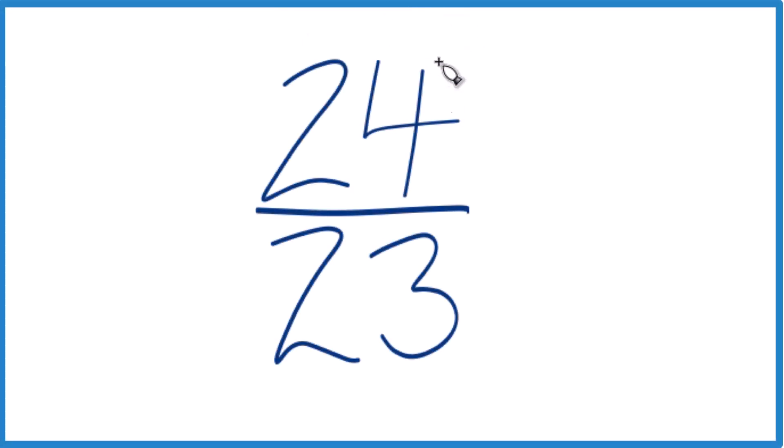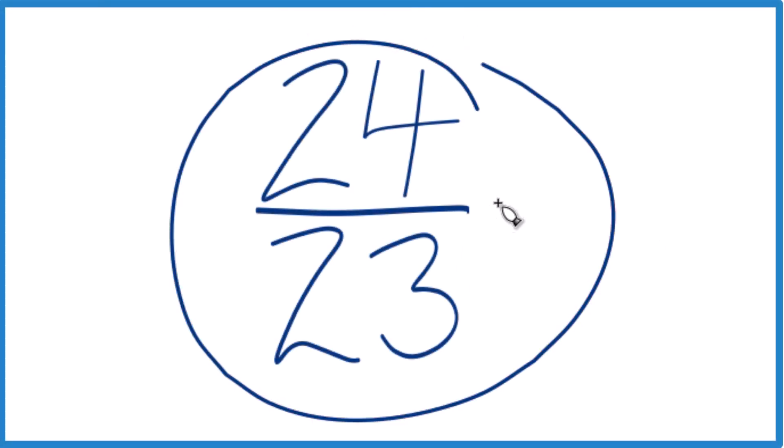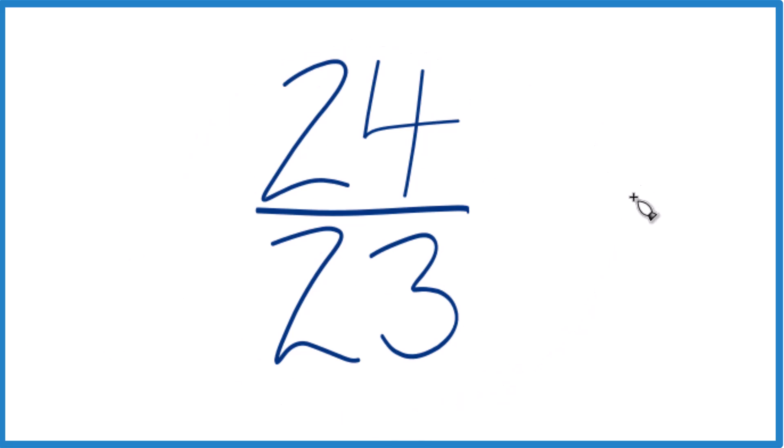Let's simplify this fraction here. We have 24 twenty-thirds. We want to reduce it down to lowest terms.